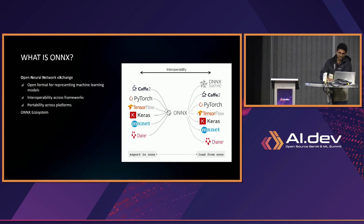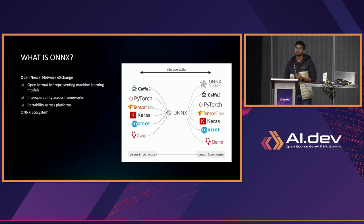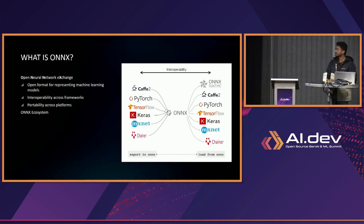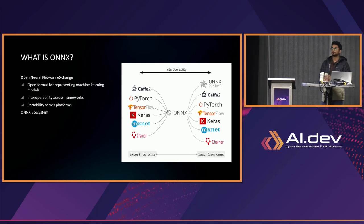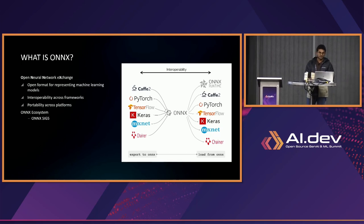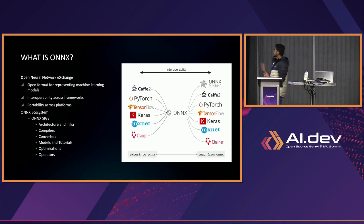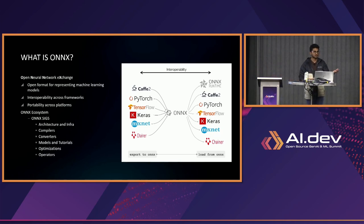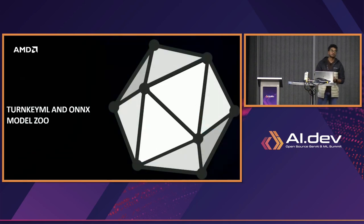The ONNX ecosystem is growing and has a very diverse community which keeps adding new operators and support for the latest advances in deep learning. At a high level, ONNX defines something called Special Interest Groups, or SIGs. Everything inside the umbrella of ONNX — whether it's a tool or a library — falls under one SIG or another. The current SIGs are: Architecture and Infra, Compilers, Converters, Models and Tutorials, and Optimization and Operators. We have Krishna here, who is the co-chair of the Models and Tutorials SIG.